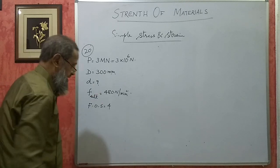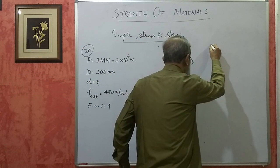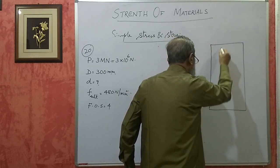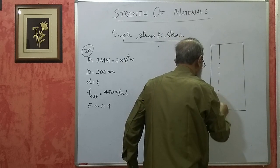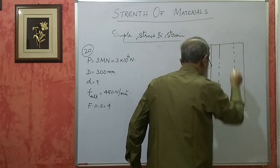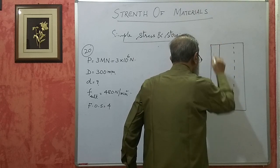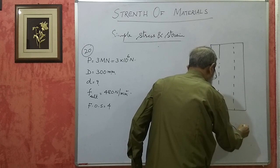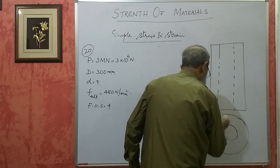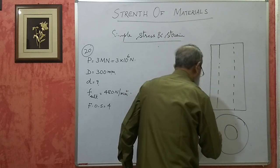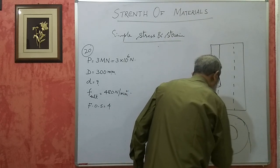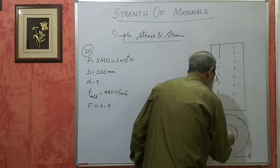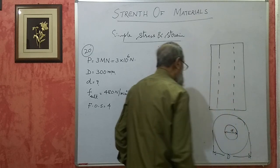I will draw a rough sketch of this. This is a short hollow column. This is the outside diameter and this is the inside diameter. Its top view will be like this. He has given the external diameter. Since it is hollow, there are two diameters. We have to find out the internal diameter D.